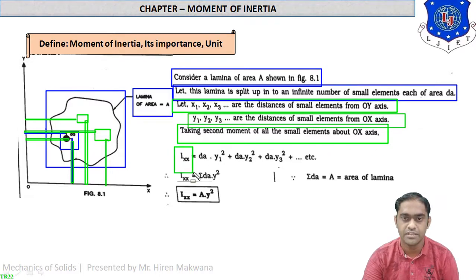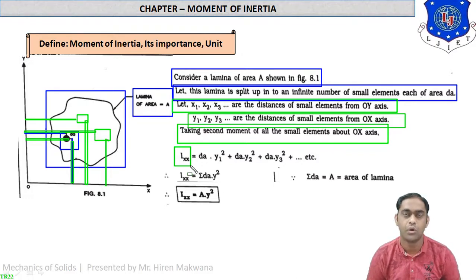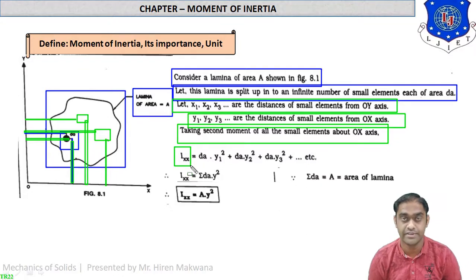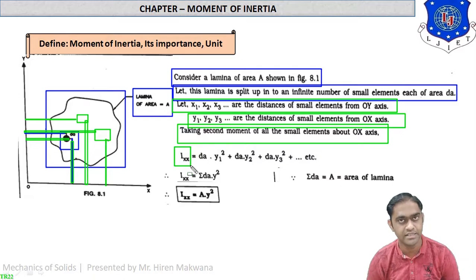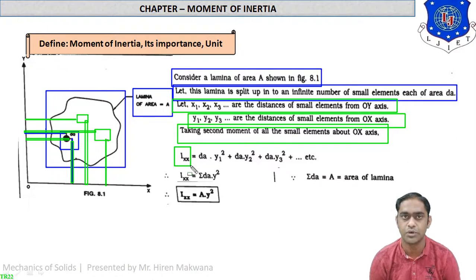It is important to know about which axis we are taking the moment of inertia — about the X axis, about the Y axis, about any other axis, or about a centroidal axis. These give various names. What is the X axis and Y axis you already know.